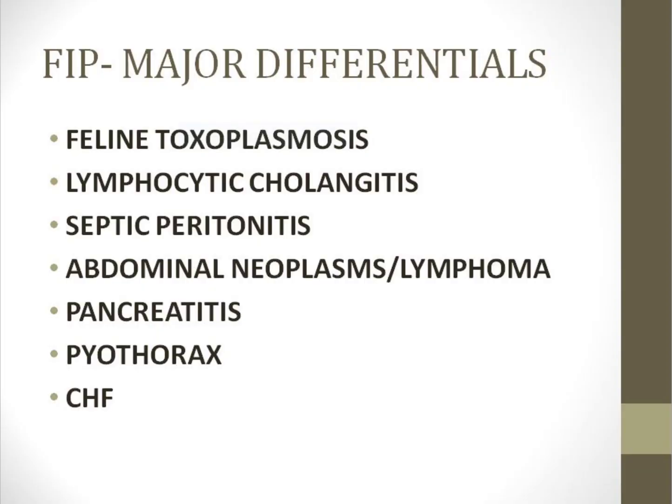There are some diseases to consider in your differential list that mimic FIP. The first is feline toxoplasmosis, which can cause uveitis, self-limiting diarrhea, jaundice, and dyspnea — similar to FIP. However, in toxoplasmosis there won't be hyperglobulinemia or a low A:G ratio, and it can be specifically diagnosed with a toxoplasma IgG titer test, allowing differentiation from FIP.